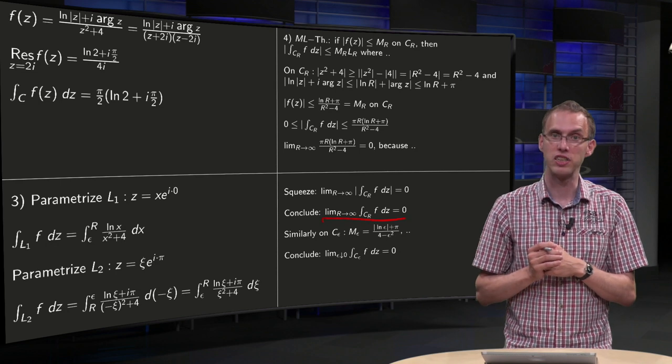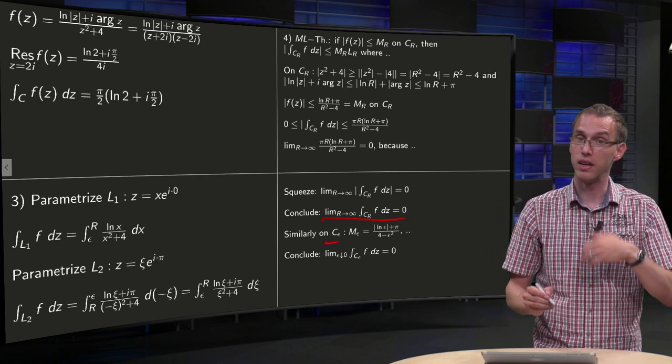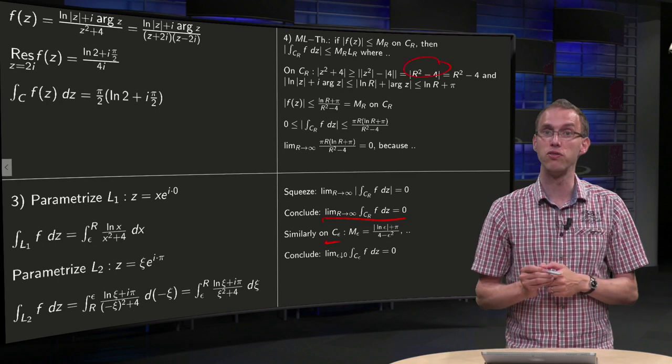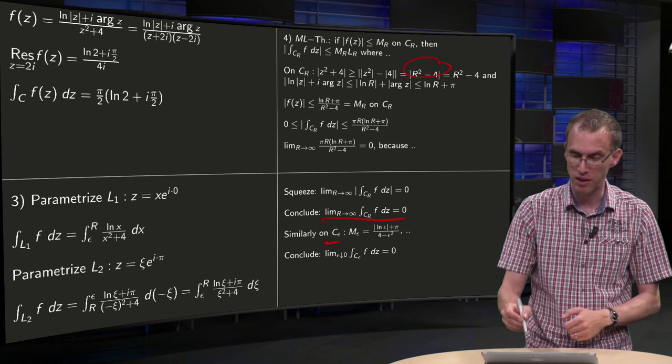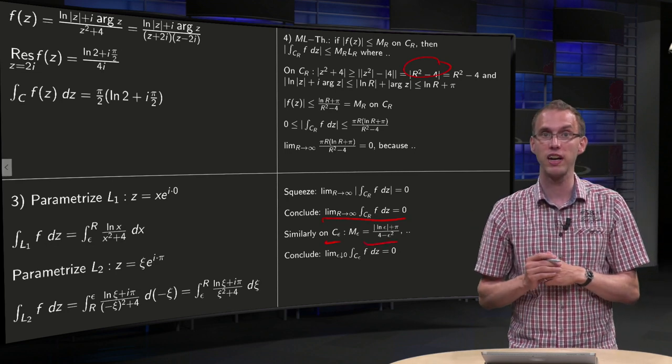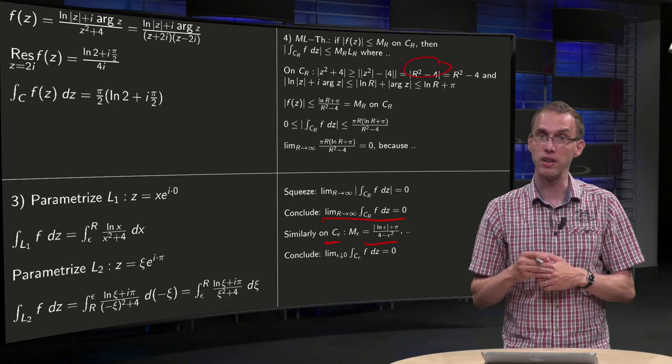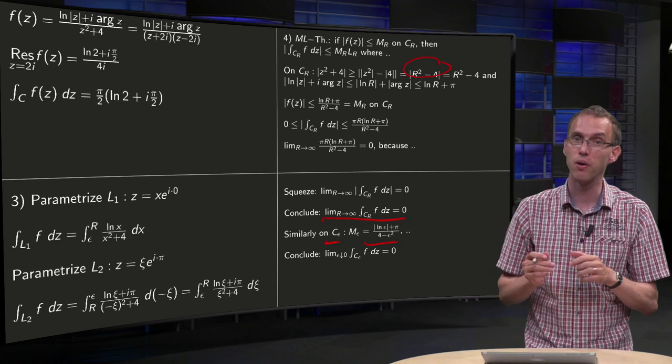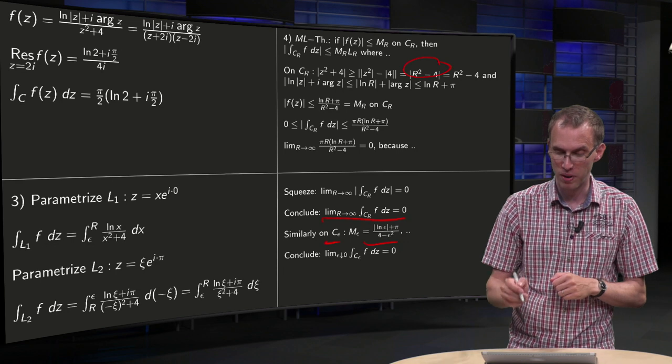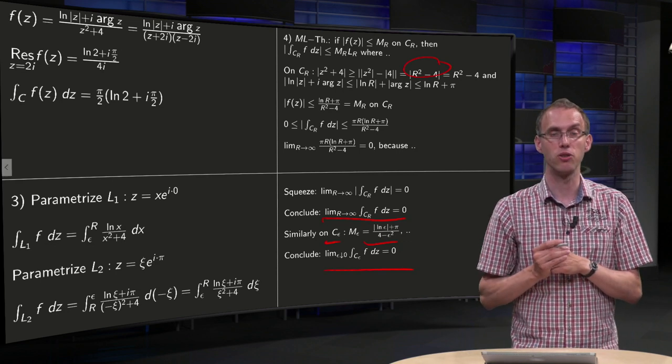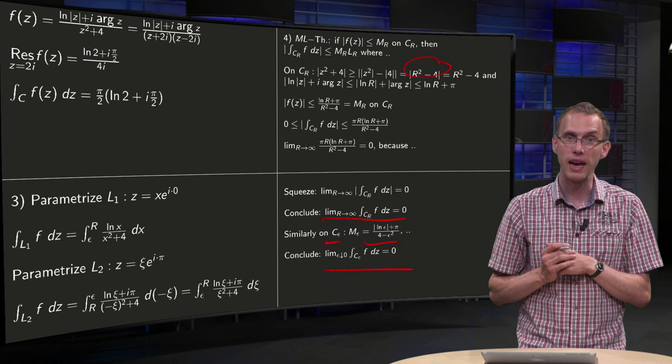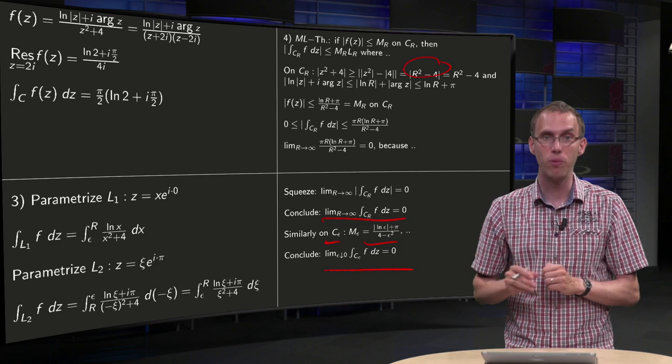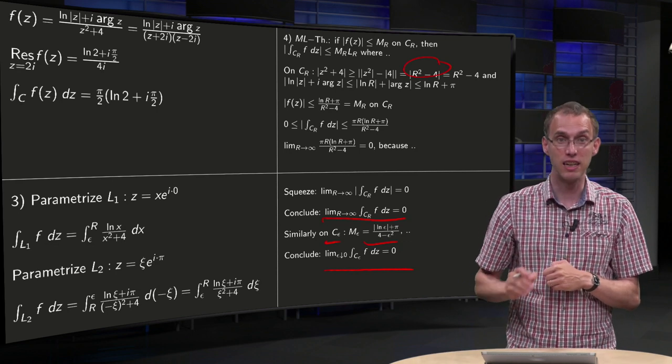Then we have to do a similar trick for along C epsilon. Well you can use the same approach, but now you have to be careful when getting rid of this absolute value over here, it just flips over because your epsilon is very small, so you get 4 minus epsilon squared. Then you have to show that in the limit M epsilon times L epsilon equals zero. So be careful there as well, and then you can conclude that this integral also equals zero in the limit. End of step number 4. See there is still some work left here showing that the limits indeed equal zero.